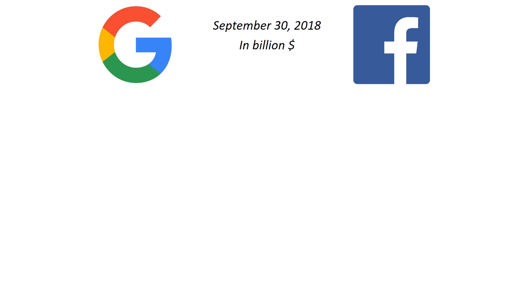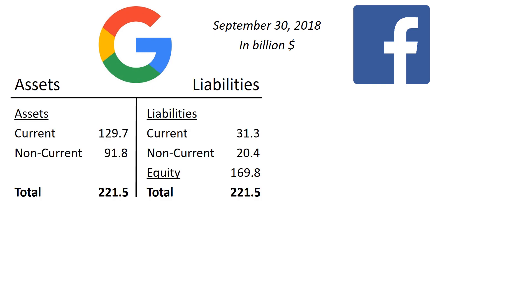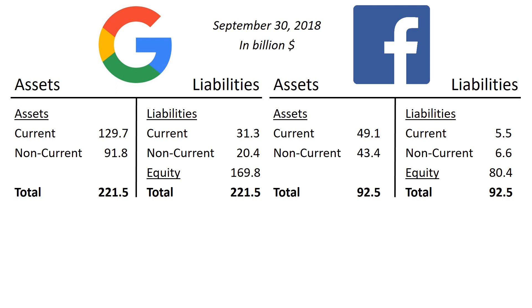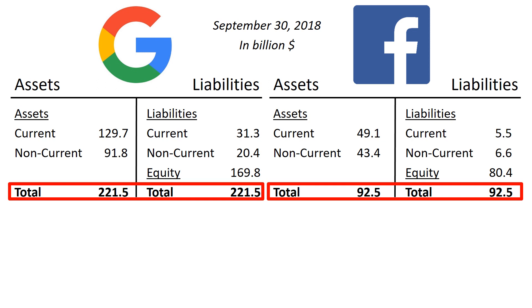Let's put the Alphabet Inc Google balance sheet on the left, and the Facebook balance sheet on the right. The latest balance sheets available at the time of making this video are those of September 30, 2018. The balance sheet total for Alphabet Inc on the left is $221.5 billion, for Facebook on the right $92.5 billion. So from the balance sheet perspective, Alphabet Inc is a much bigger company.